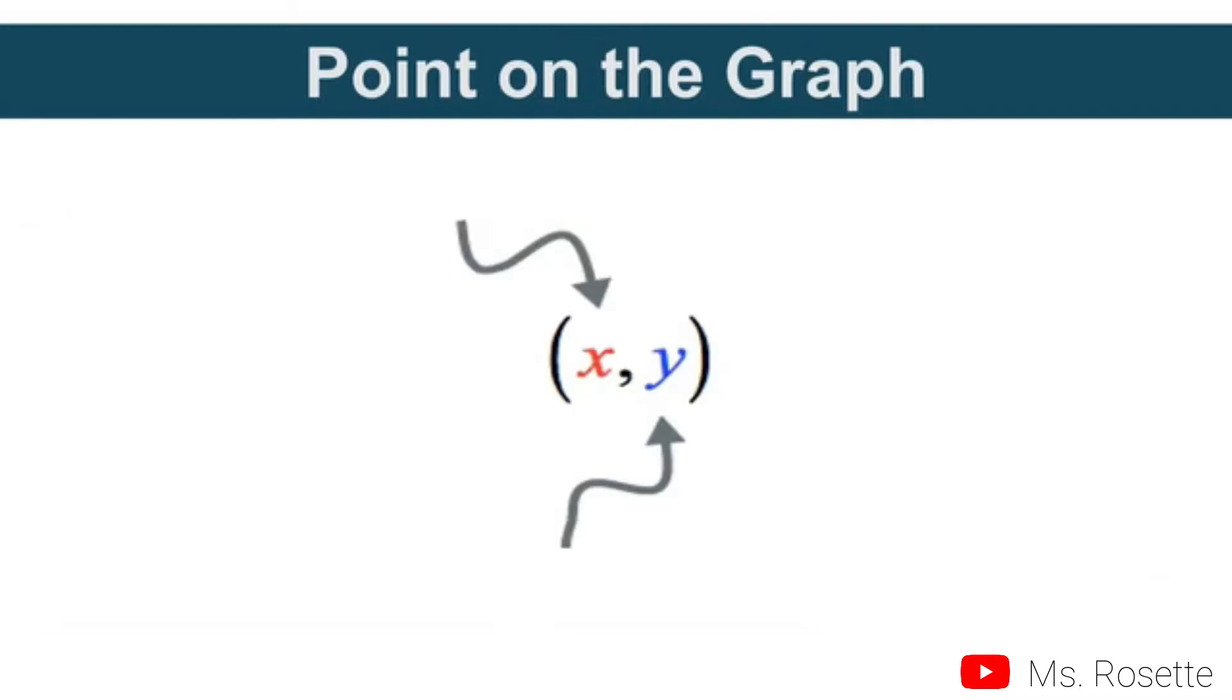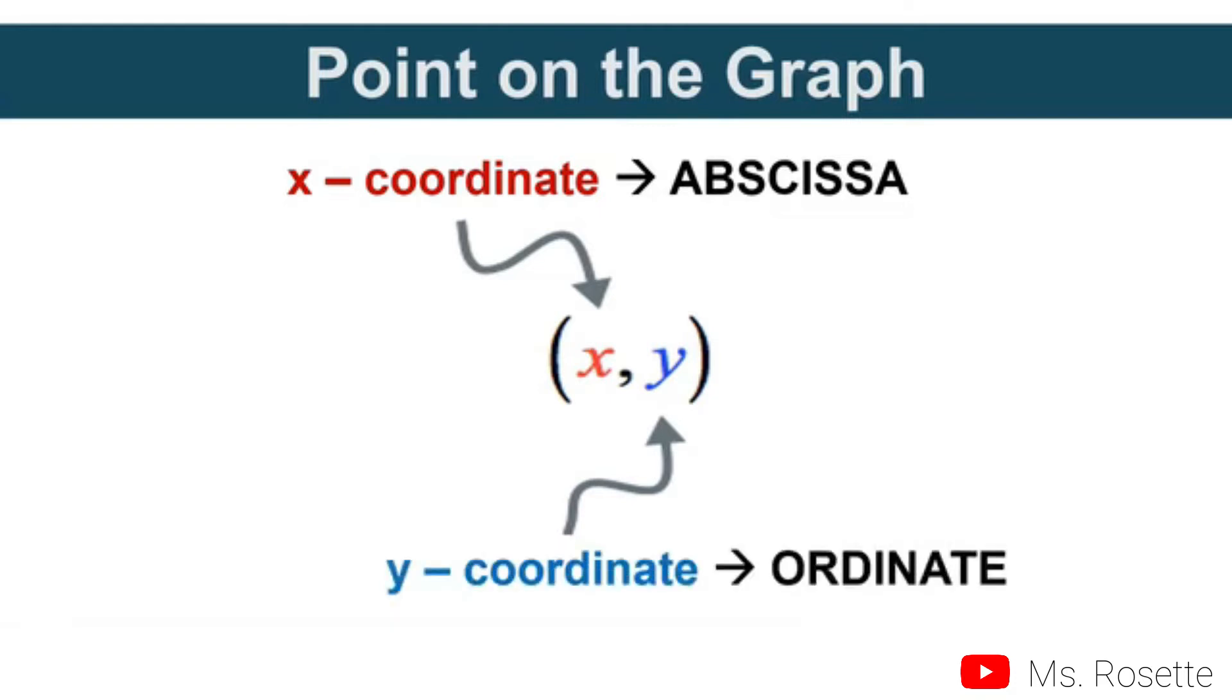In an ordered pair, the first number is always the x-coordinate, or we also call this the abscissa. The second number is the y-coordinate, or we can also call this the ordinate.